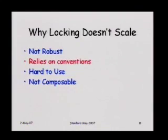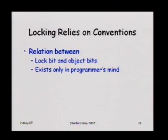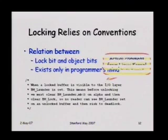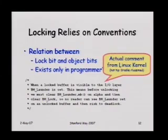Another problem with locking is that it relies on conventions. The relationship between the bit in memory representing the lock and the bits representing the object exists only in the mind of the programmer. Languages like Java and C# have tried to fix this by associating locks with objects, but that doesn't work in any non-trivial cases. Evidence for this is this actual quote from the Linux kernel — you can tell by reading it that there will be fearsome consequences for not understanding it. This is not the basis for a scalable, sustainable software development methodology.